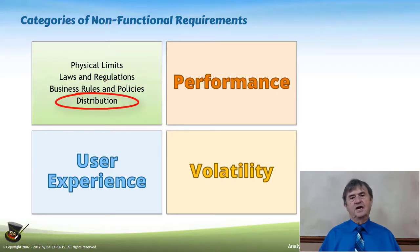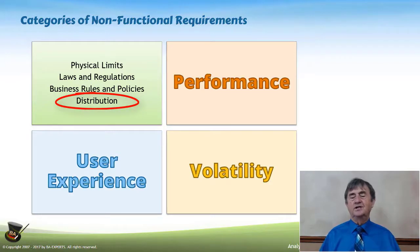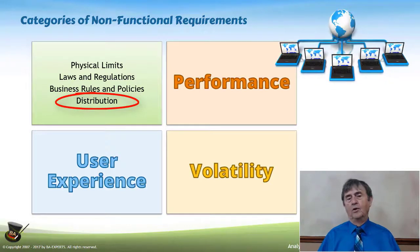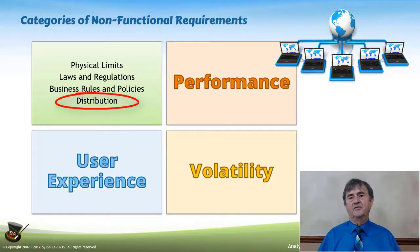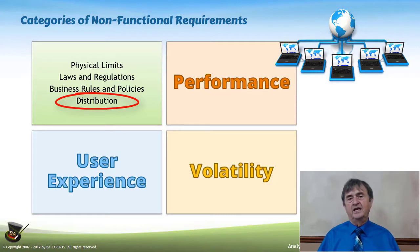Distribution is another type of constraint, and it has to do with where work is done and where data resides. As companies get larger and become more global, this becomes a bigger issue. Anything to do with the ability of people in different physical locations to perform functions or access data falls into that category.